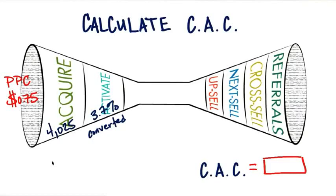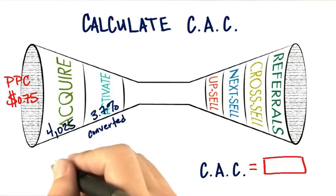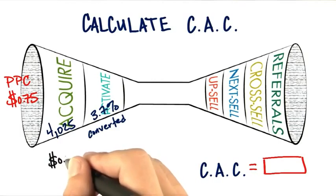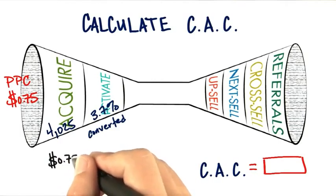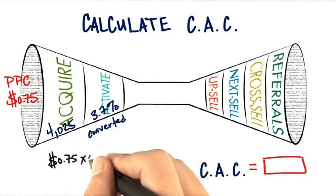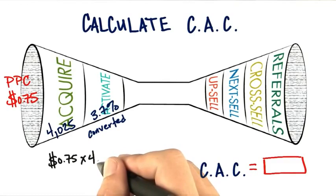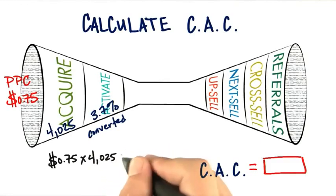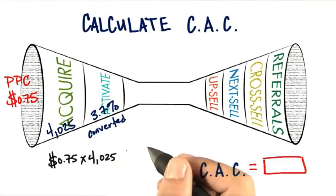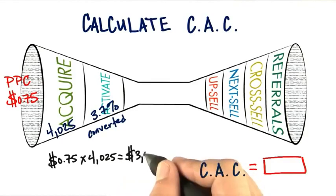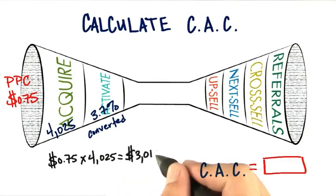So let's see how we came up with our answer. Number one, our pay per click number was $0.75 for each customer that we got to our site. And we know we got 4,025 customers. So if we multiply that out, we know we've spent $3,018.